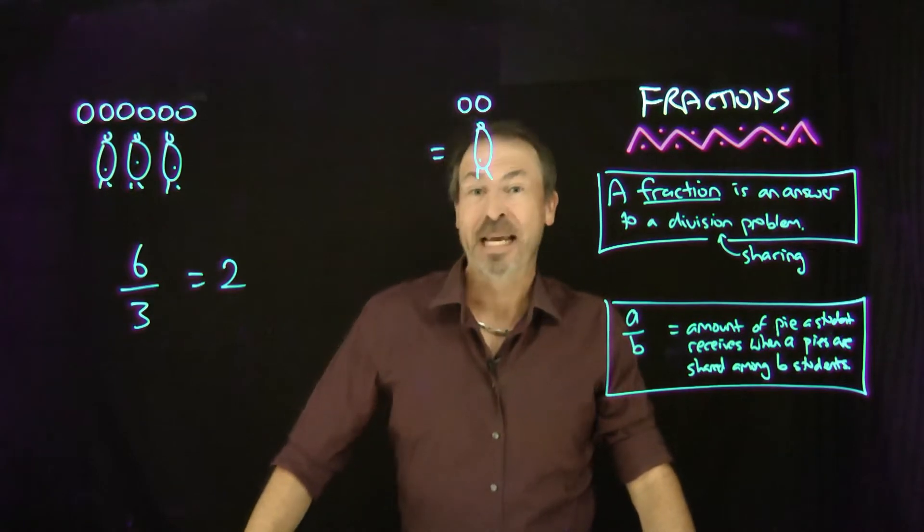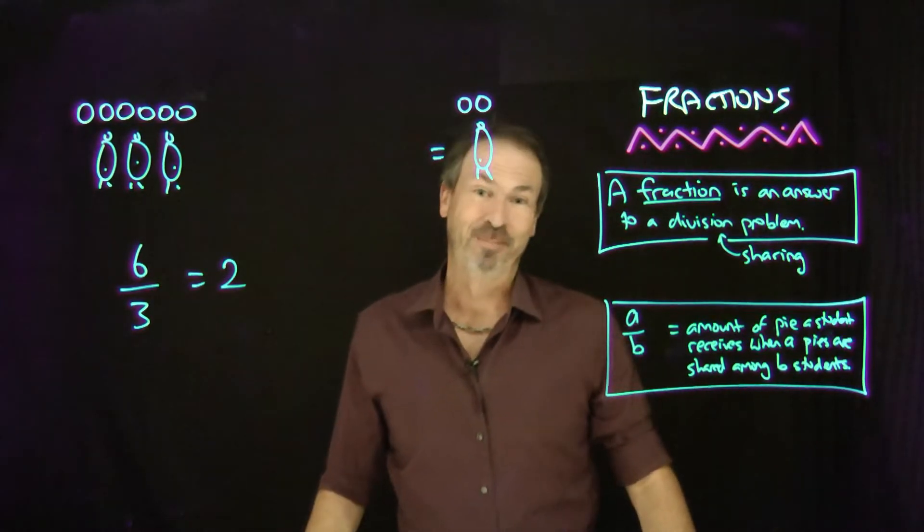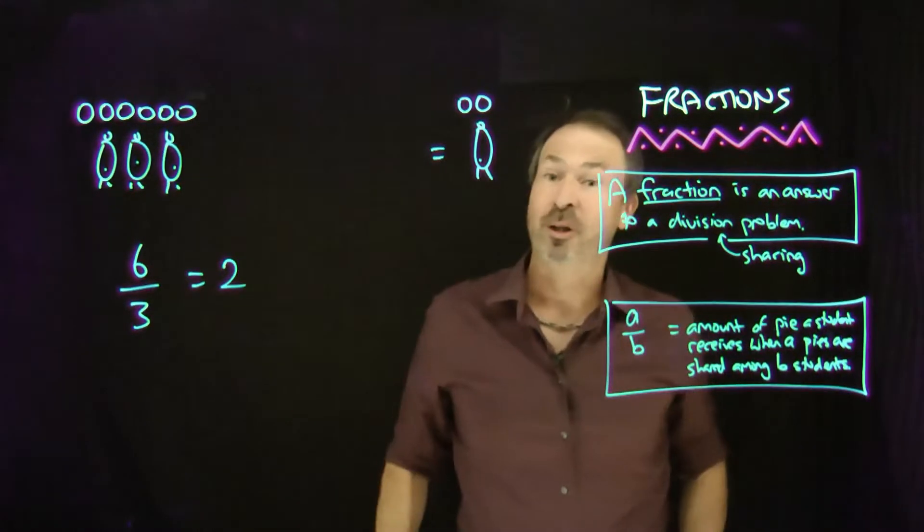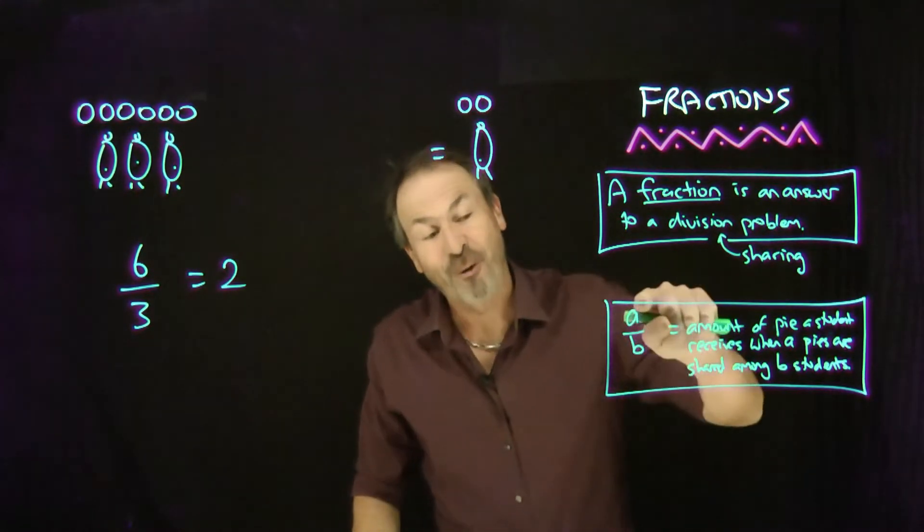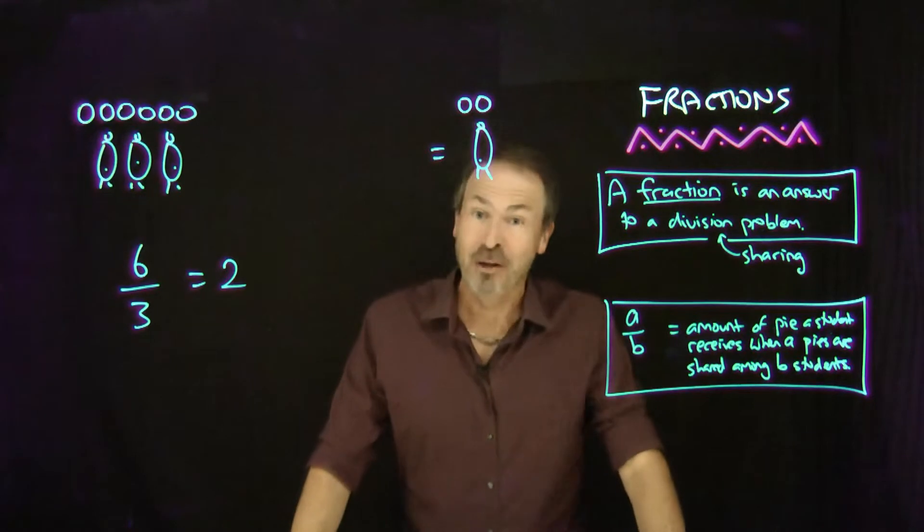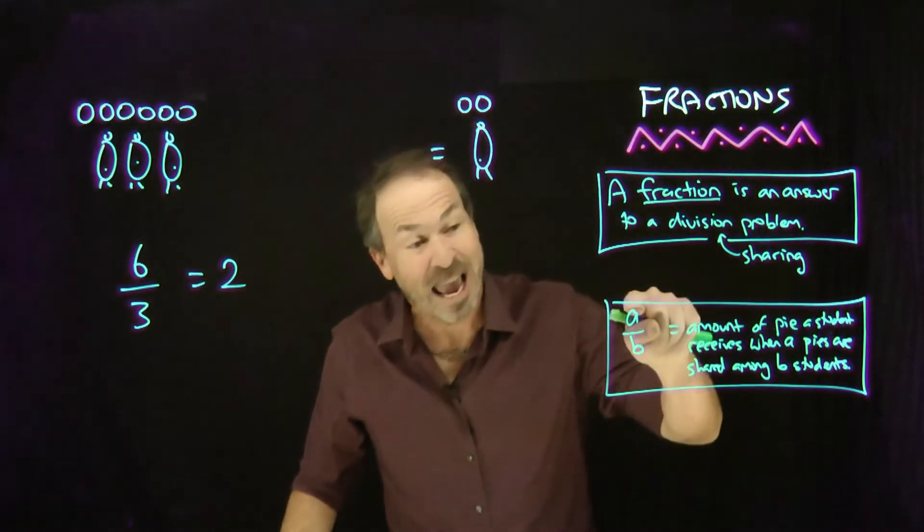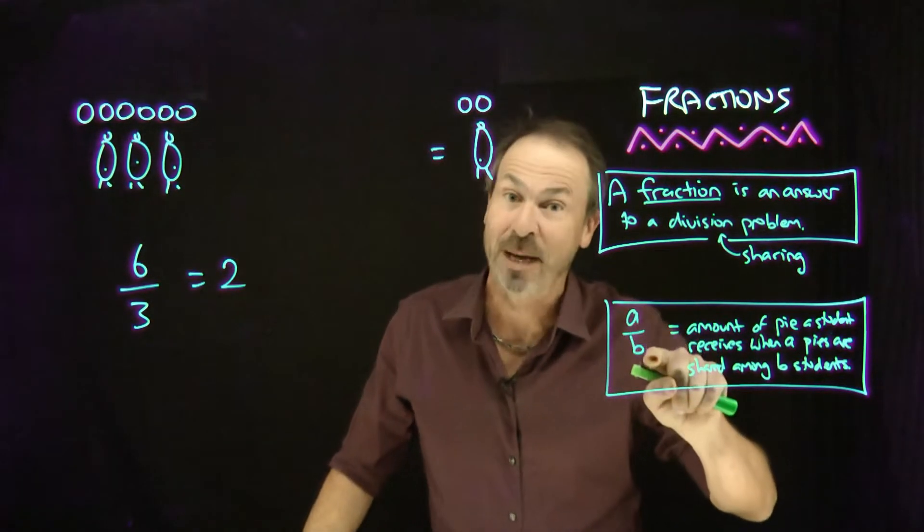Okay, so now we're ready for belief number four about fractions. Now recall, a fraction is an answer to a division problem, and I'm thinking of division as sharing in my model. In fact, the fraction a over b is actually the amount of pie each student receives if a pies are shared equally among b students.